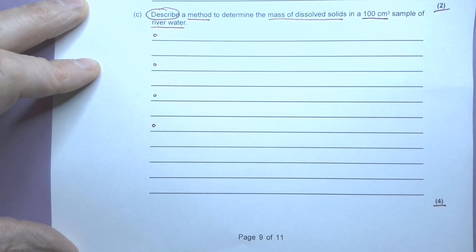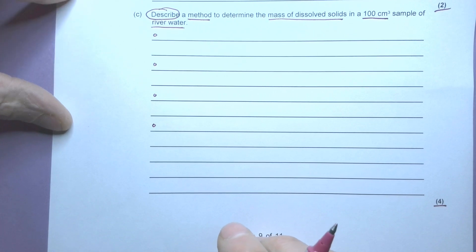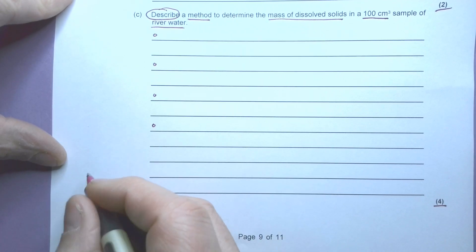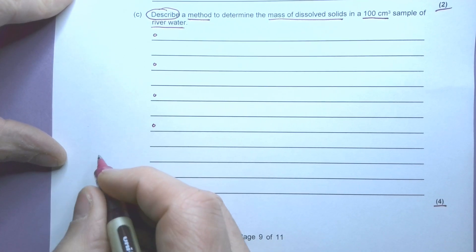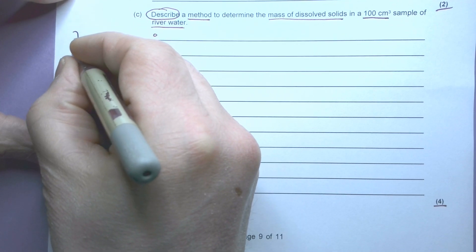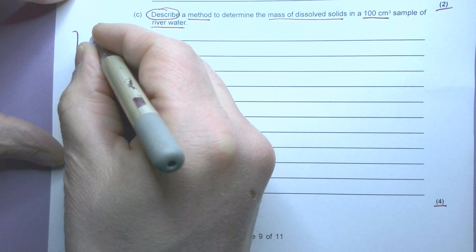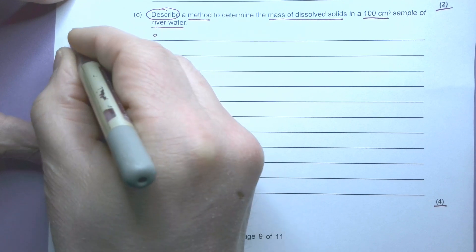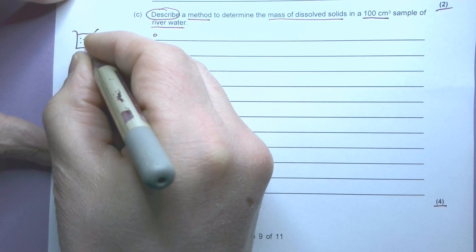Now what I might do here is just to get an idea - what have I got to do? Well, I'm going to start off with - this is where you can just use in the margin sometimes - I'm going to start with a container of water, and this water is going to have stuff dissolved in it.